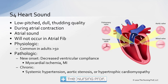The S4 is a low-pitched, dull, thudding quality sound occurring right before S1 during atrial contraction. It does not occur in atrial fibrillation because there is no effective atrial contraction during a-fib — the atria are just fibrillating. Physiologically, it can occur in adults older than 50. Pathologically, a new onset indicates decreased ventricular compliance, associated with myocardial ischemia and myocardial infarction. Chronic S4 can be caused by systemic hypertension, aortic stenosis, or chronic cardiac hypertrophy. The real value is finding that new onset — if you listened this morning and there was no S4 but now you hear one, that's a red flag for myocardial ischemia requiring prompt intervention.